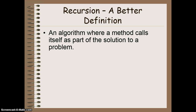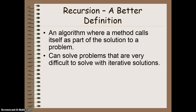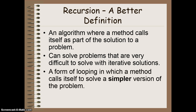Recursion is an algorithm where a method is going to call itself as part of the solution to a problem. This is going to allow us to solve quite complex problems by using a single method that is going to be iterative in its response. Basically, this is a form of looping, but instead of having a for or a while loop, the looping occurs by having the method call itself again and again. The key here is that when the method is calling itself, it is calling a simpler version of the method it already called, and it keeps getting simpler and simpler until we get to a base case — the simplest possible version of that problem — which would then lead us to our overall solution.